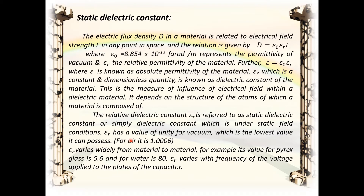Epsilon_r has a value of unity for vacuum, which is the lowest value it can possess. For air, it is 1.0006. Epsilon_r varies widely from material to material; for example, its value for pyrex glass is 5.6 and for water is 80. Similarly, epsilon_r varies with the frequency of the voltage applied to the plates of the capacitor.